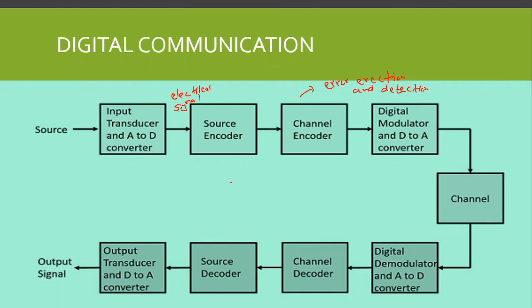The source decoder converts bits back to a waveform. After converting bits to the waveform, we have a digital-to-analog converter, so the digital signal is converted back to analog. Finally, the output transducer — for example a loudspeaker — converts the electrical signal back to the original form, such as sound waves.